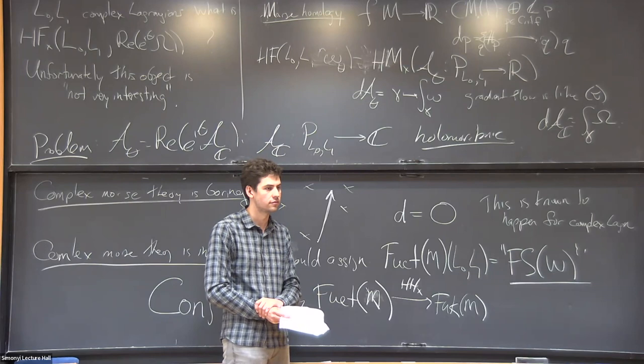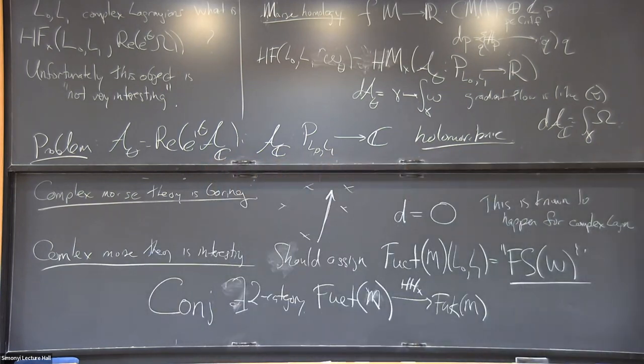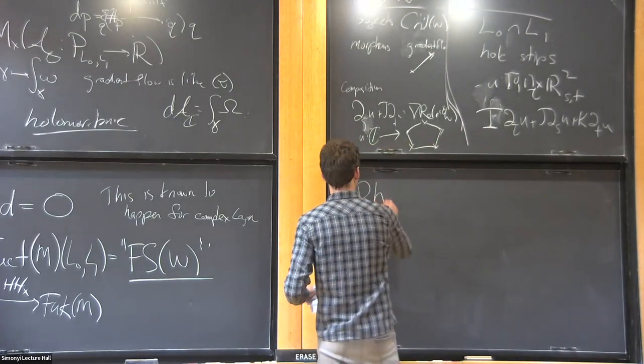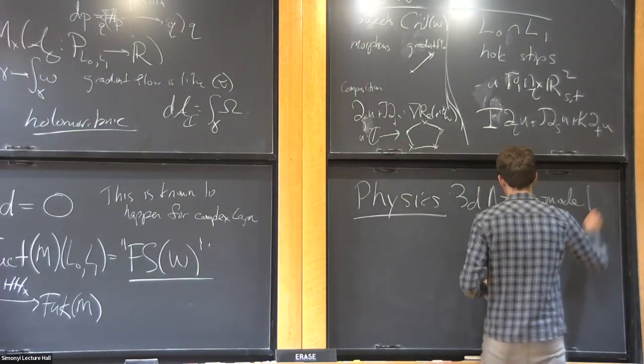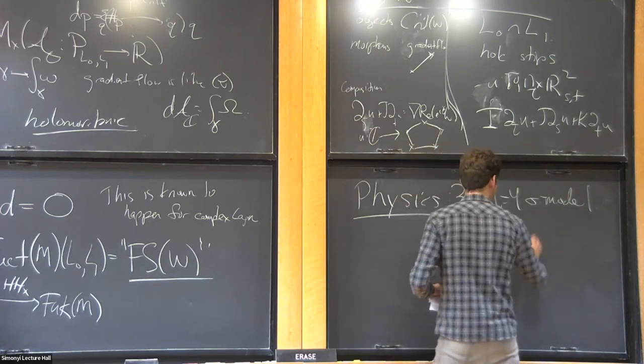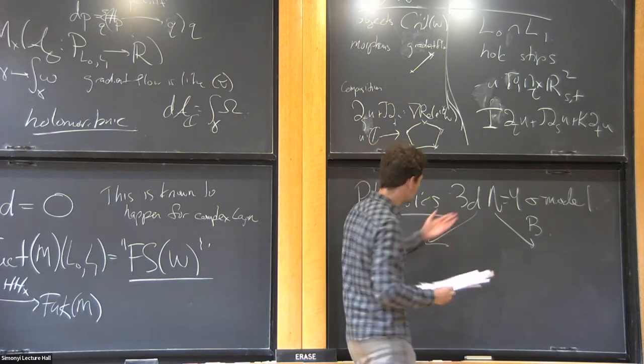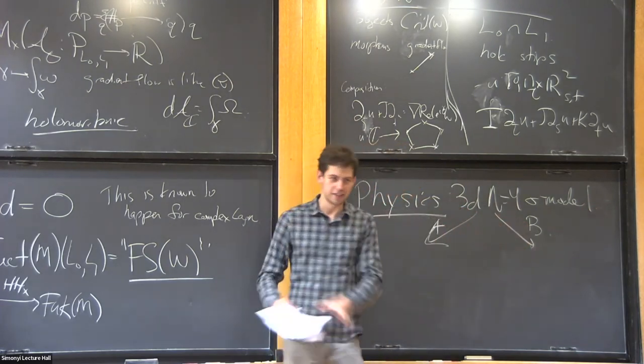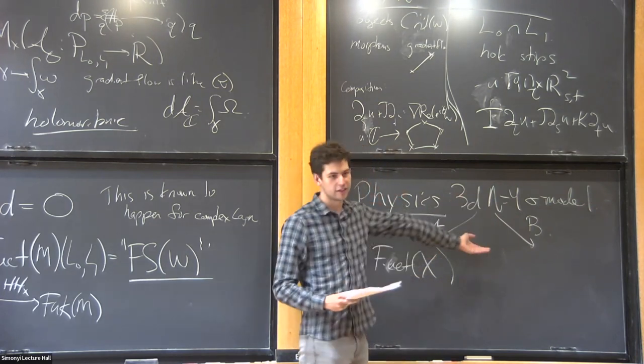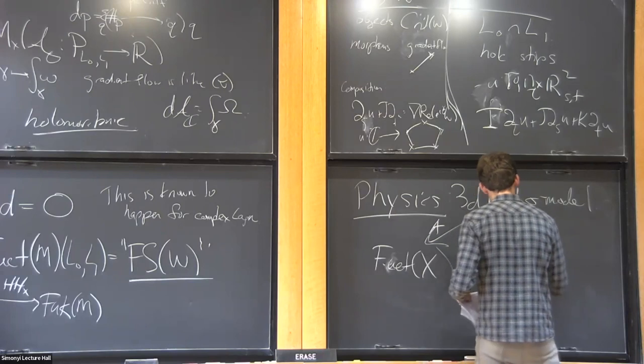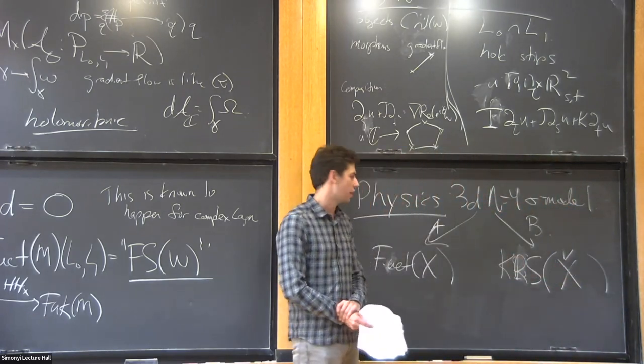Are there some heuristics about this that come from physics? Yes. There is some kind of 3D N=4 sigma model. This has an A twist and a B twist, just like the 2D sigma model that gives rise to 2D mirror symmetry. The A twist should give you—both of these give you TQFTs. The A-side TQFT assigns two-categories to boundary conditions to X. The B-side is this thing called the Kapustin-Rozansky-Saulina category, which has been, because it's algebraic, a little better studied, but it also has your X checks.